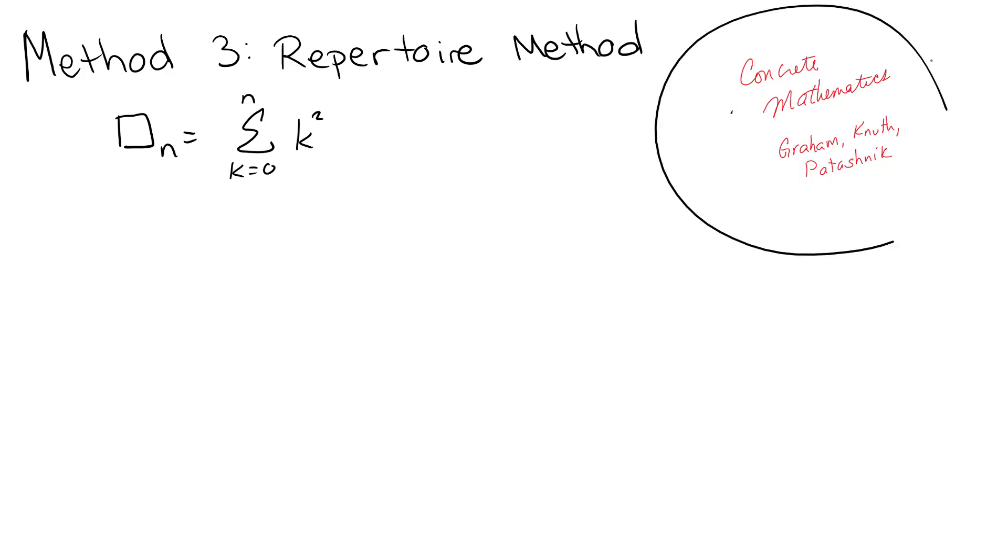We are going through this Concrete Mathematics book by Graham, Knuth, and Patashnik, and they have these different methods for solving basically taking something that you have as a summation and solving it in closed form. We've already gone through three methods because the first one was method zero, and we're now looking at method three, which is the repertoire method.